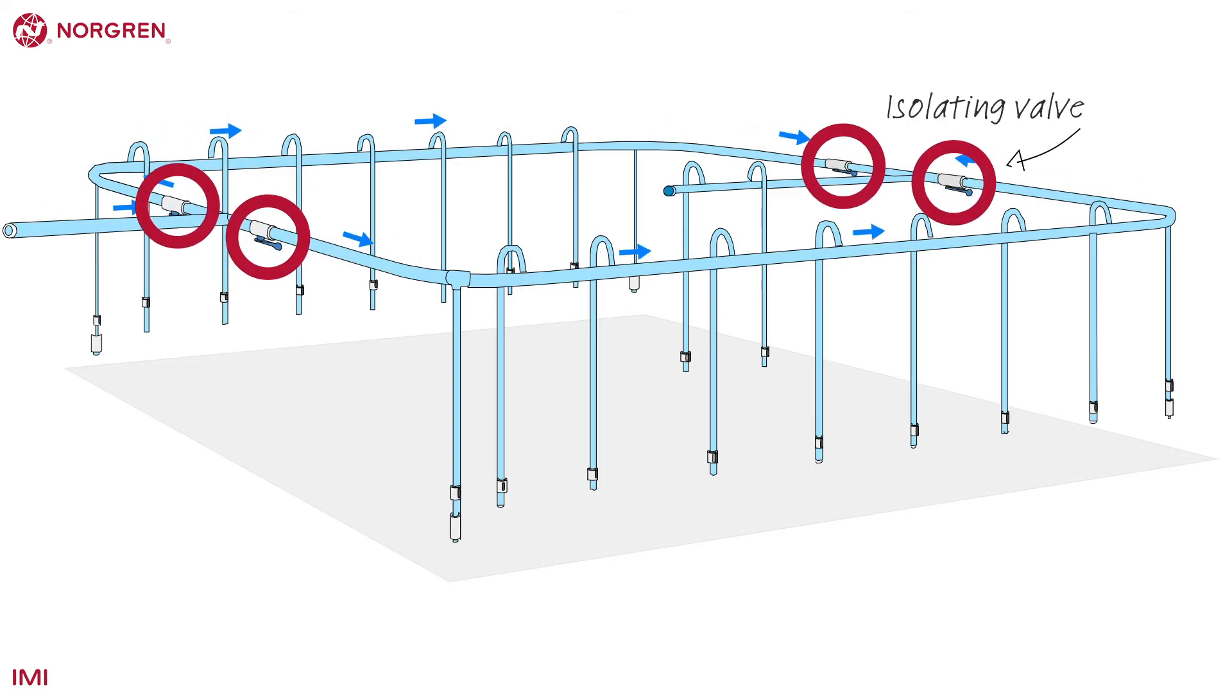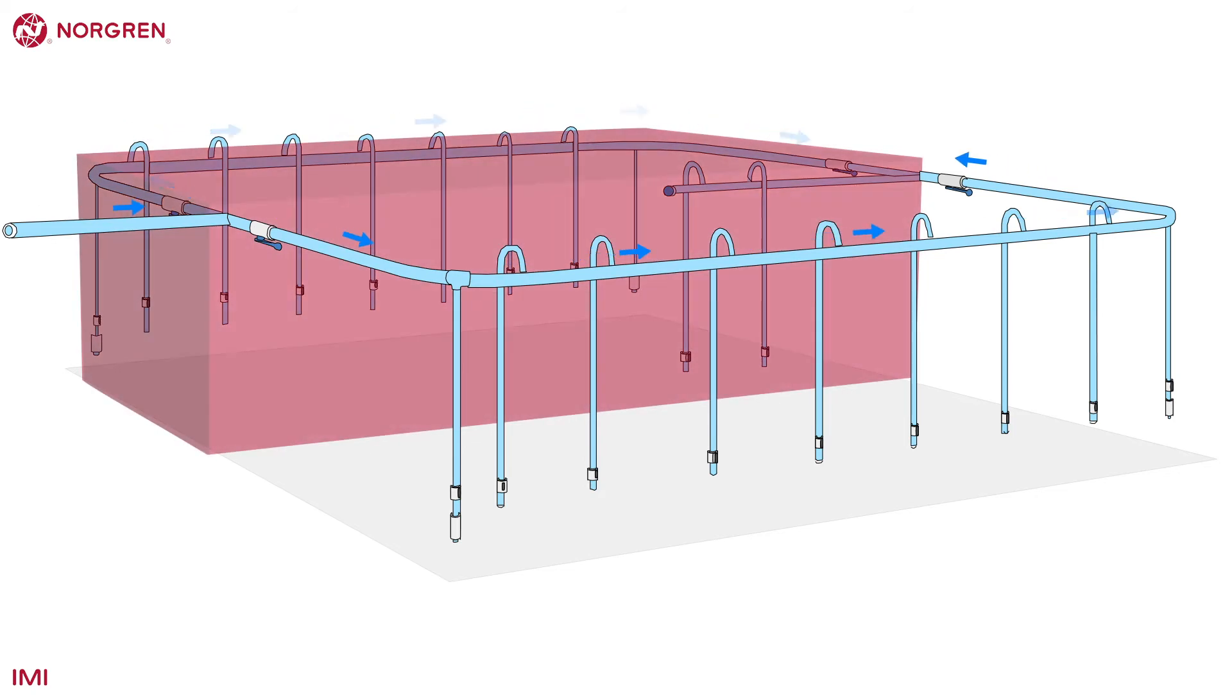There are four valves in this visualization. They are located in such a way to isolate half of the ring main, allowing maintenance or repair while the other half continues operation.